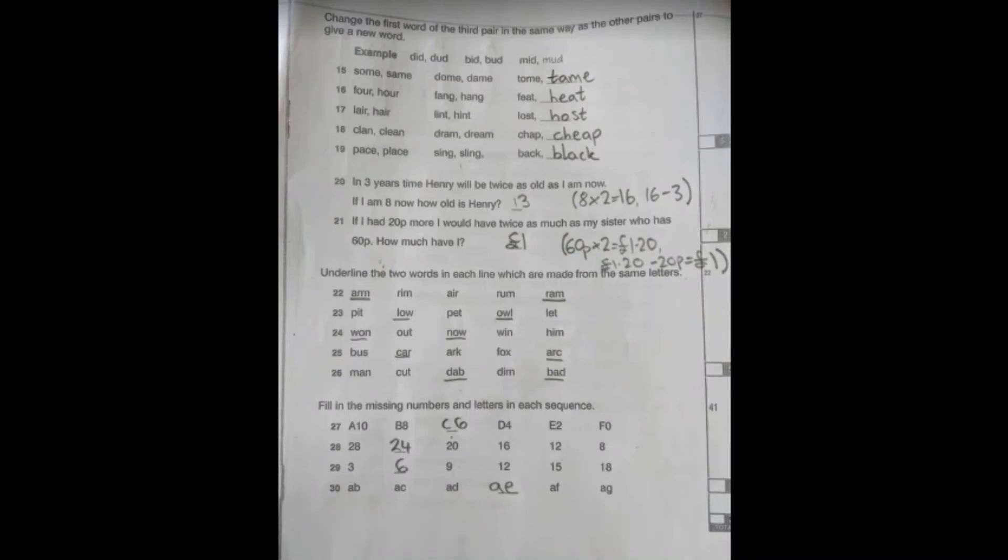Question 21 is a bit easier. If I had 20p more, I would have twice as much as my sister who has 60p. How much have I got? I will have one pound. So again we'd work it out by having twice as much as his sister. So 60p times two is one pound 20, and he would need 20p more to have that amount. So you'd have to take the 20p off. So one pound 20 minus 20p gives you one pound. So very well done if you've got questions 20 and 21 correct.